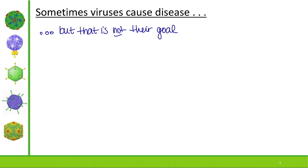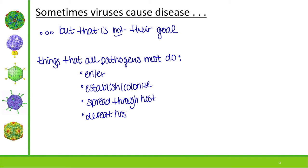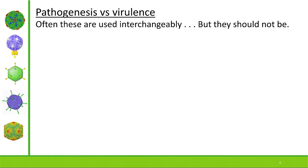We have to mention what a pathogen is, but first I want to tell you the things that all pathogens must do. Although viruses are considered pathogens, we also have fungal and bacterial pathogens, and regardless of type, there are five steps all pathogens must follow: enter the host, establish or colonize, spread through the host, defeat the host immune system, and exit the host. Sometimes exiting the host may or may not cause damage within the host.